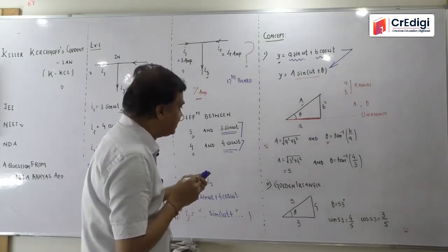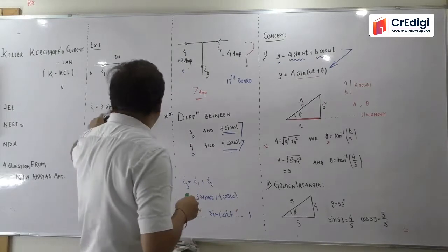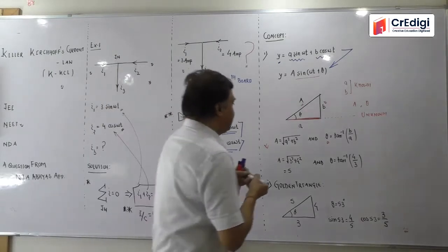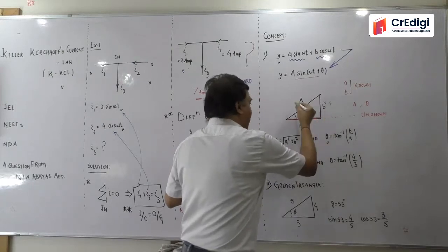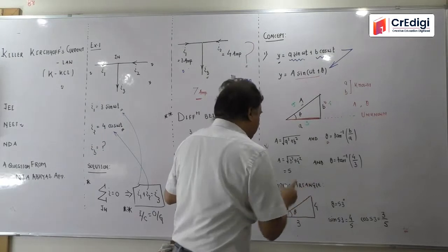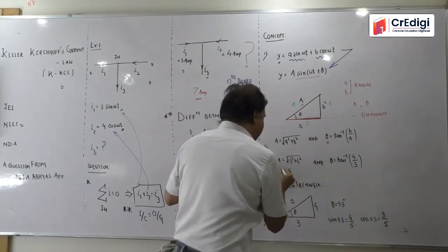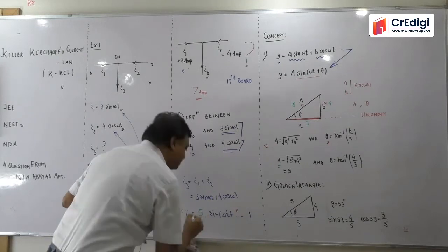Sir, A is, quickly see, 3 sine omega t. So sine with A is 3. Cos with A is 4. Pythagoras theorem applied. Root of 3 square plus 4 square is 5. So you can say capital A is equals to 5. So you can say capital A is equals to 5.